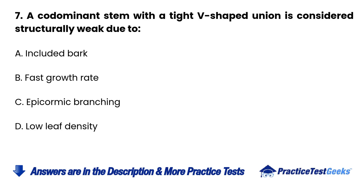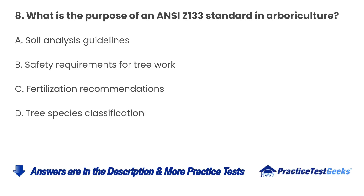Question 7. A codominant stem with a tight V-shaped union is considered structurally weak due to: A. Included bark. B. Fast growth rate. C. Epicormic branching. D. Low leaf density.